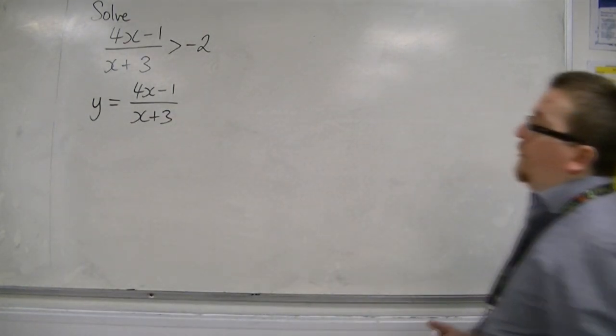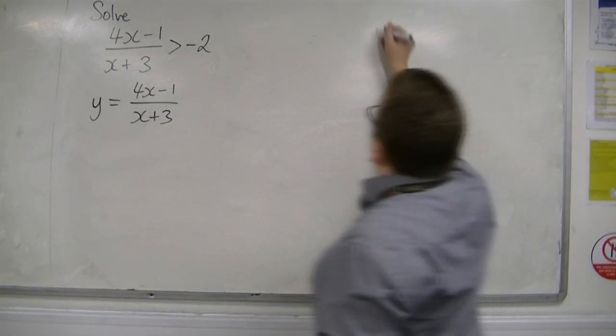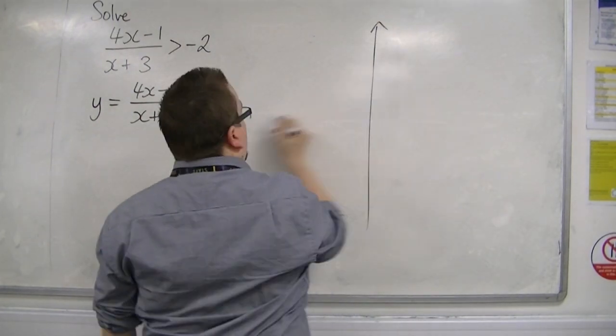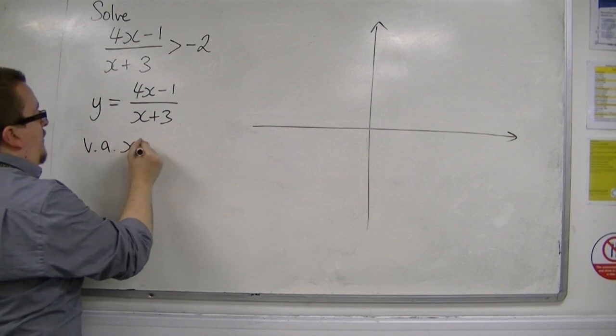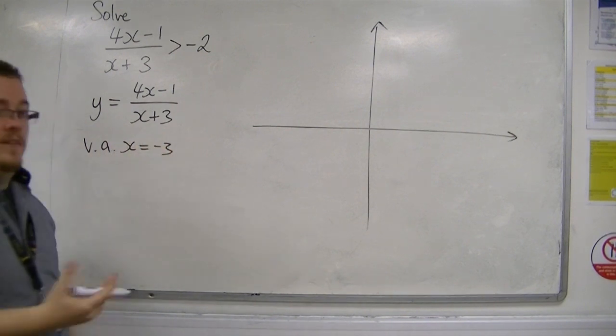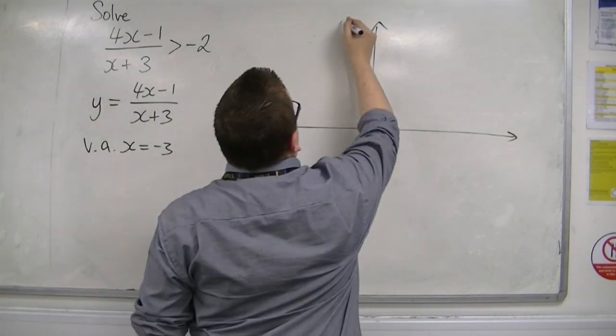So we've got y is equal to 4x minus 1 over x plus 3. So I can identify that it's got a vertical asymptote at x is equal to minus 3, that's when the denominator is 0. So we've got minus 3.